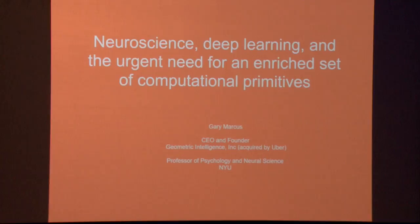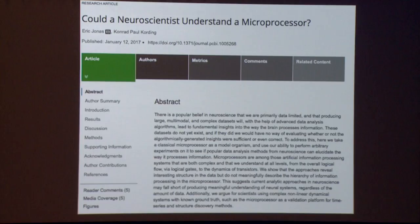I'm going to start my talk by advertising somebody else's paper that I hope everybody here will read. The paper is called 'Could a Neuroscientist Understand a Microprocessor?' and it's free and online by Eric Jonas and Conrad Kording.